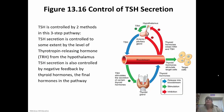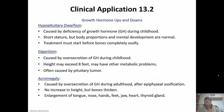Thyroid stimulating hormone secretion is controlled in two ways: by the hypothalamus releasing thyrotropin releasing hormone, and by the level of thyroid hormones in the body. Hypopituitary dwarfism is caused by a deficiency of growth hormone during childhood — the person has short stature, but body proportions and mental development are normal. Treatment must start before the bones completely ossify, so it has to be started very early to have any effect.